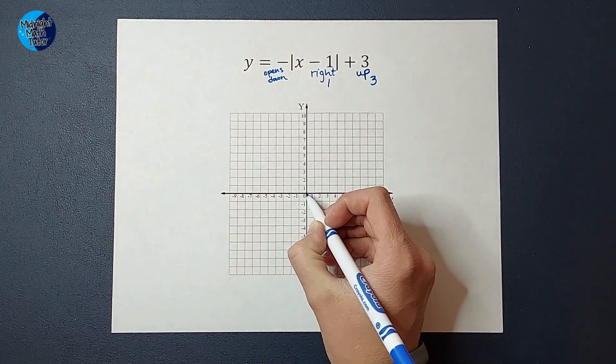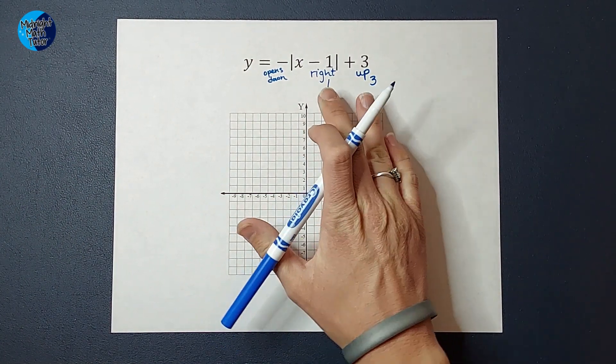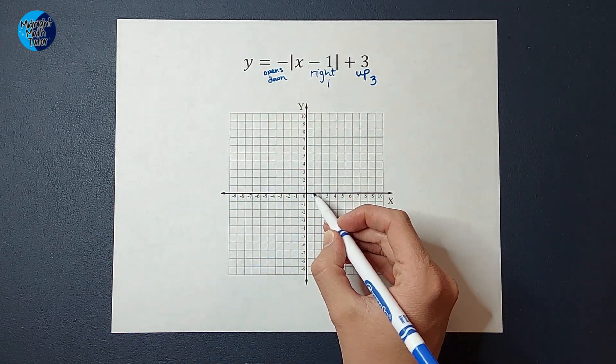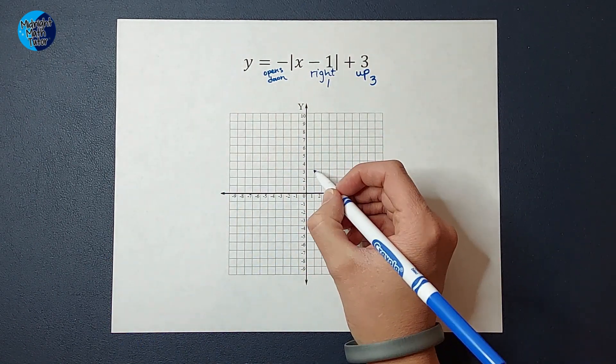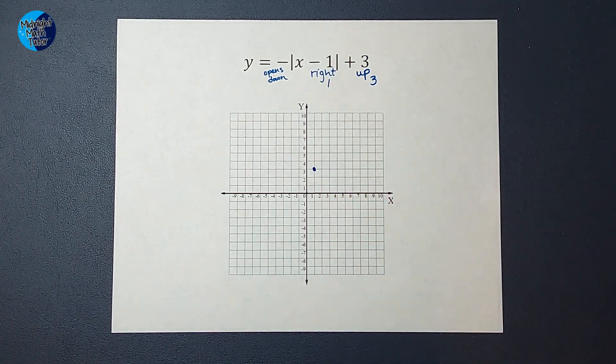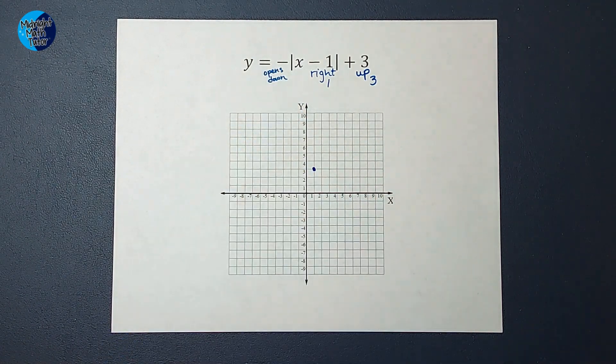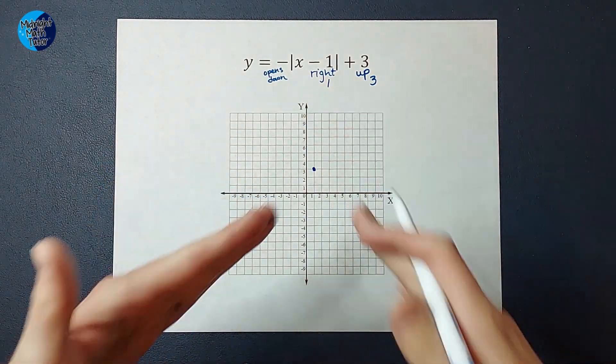So my parent graph, the vertex is at zero, zero. But I have figured out from this equation that I'm going to move to the right one and up three, and that is my new vertex. And I also know because of this negative that it is going to open down.